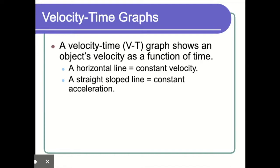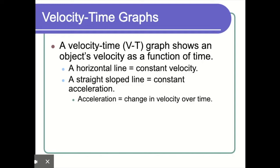The other type of line we're going to see is a straight slope line. In this case, it means that velocity is changing. If velocity is changing, it means that we're experiencing acceleration — we will have a constant acceleration. Acceleration is just the change in velocity over time, and we know that the change in something over something else is just a fancy way of saying the slope.